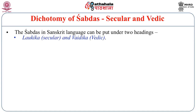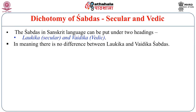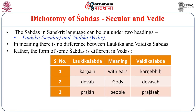Shabdas in Sanskrit can be put under two headings: Laukika (secular) and Vaidika. As far as meaning is concerned, there is no difference between Laukika and Vaidika Shabdas. Rather, the form of some Shabdas differs in the Vedas. For example, in Laukika it is Karnaihi (with ears), whereas in Vedic texts the form differs. Devaaha in Laukika Bhasha means gods, whereas in Veda we find Devasaha; Prajaha becomes Prajasaha. So there is a slight difference in the form of Shabdas.